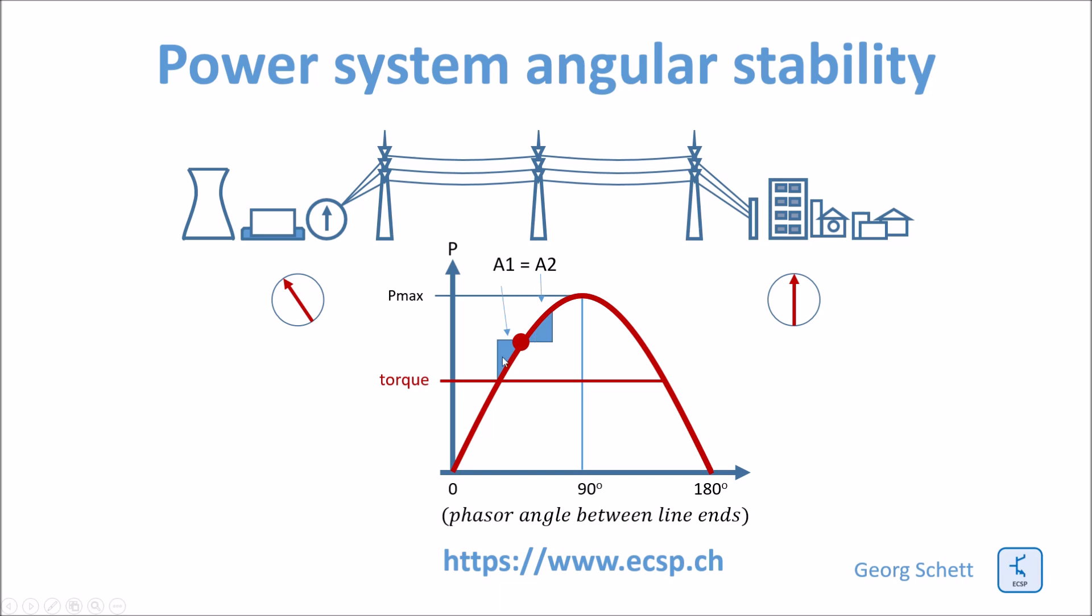The system can be kept stable only if the triangles between the original set point and the maximum amplitude of the oscillation down to the new equilibrium, if these two blue triangles can have the same surface. Otherwise, the system will leave the stable condition.